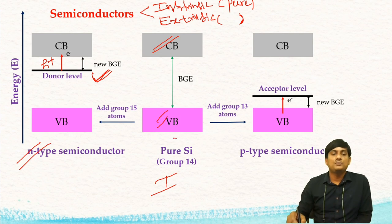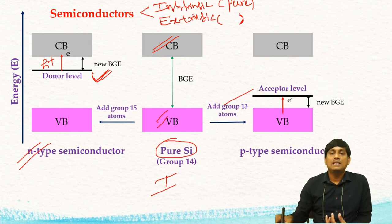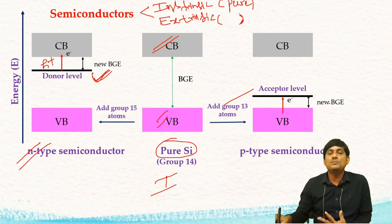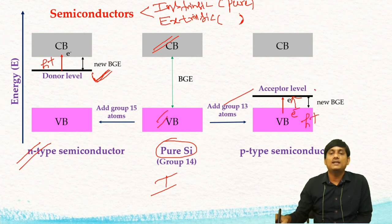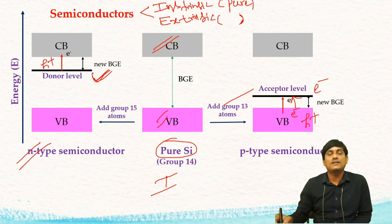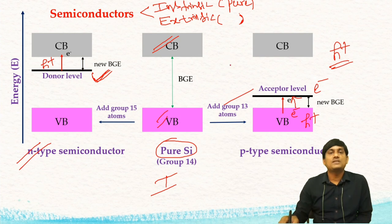If you dope pure silicon with group 13 atoms, there is a creation of an unfilled level called the acceptor level, which is close to the valency band. There is a new band gap energy between the valency band and the acceptor level. The electrons in the valency band transfer to the acceptor level, creating holes in the valency band and electrons in the acceptor level. Due to the formation of electrons and holes, there is conductivity in this type. Since the major charge carriers are holes, these are called p-type semiconductors.